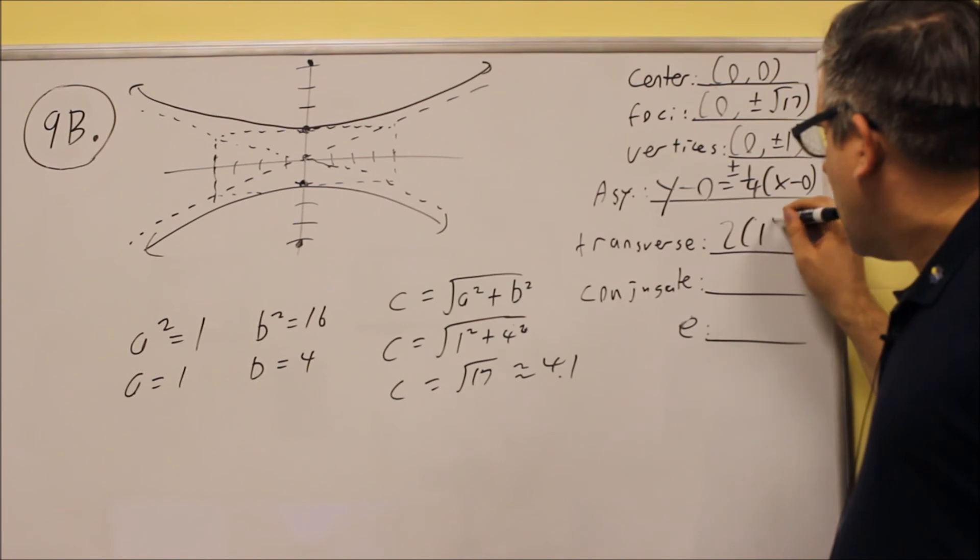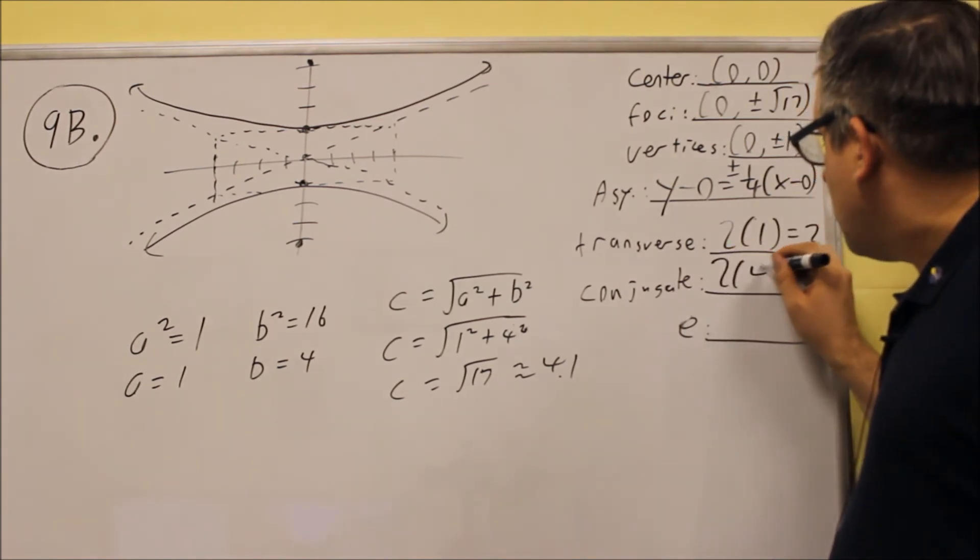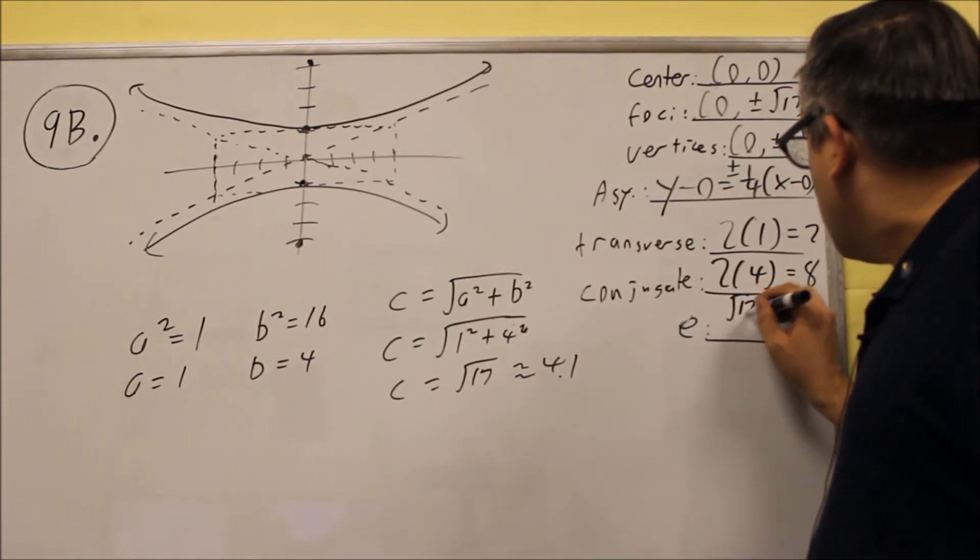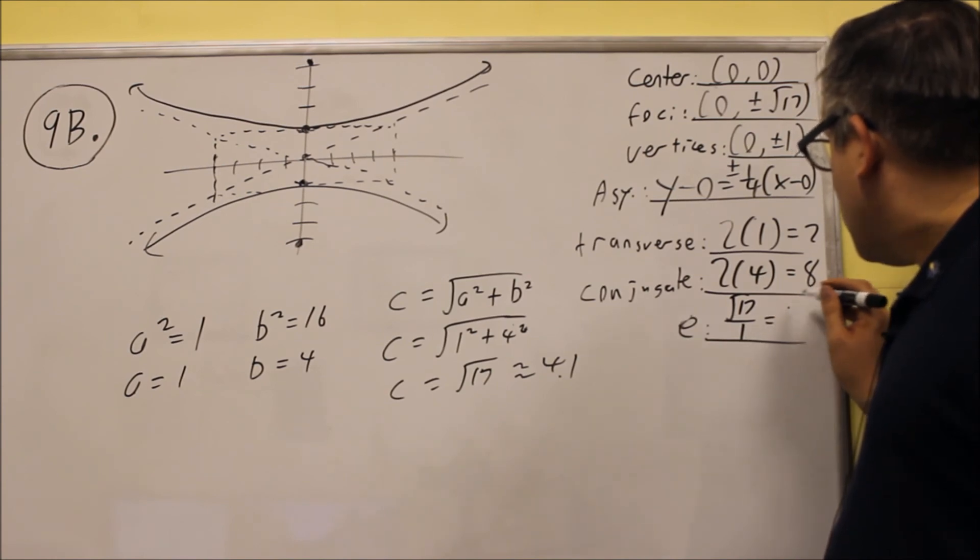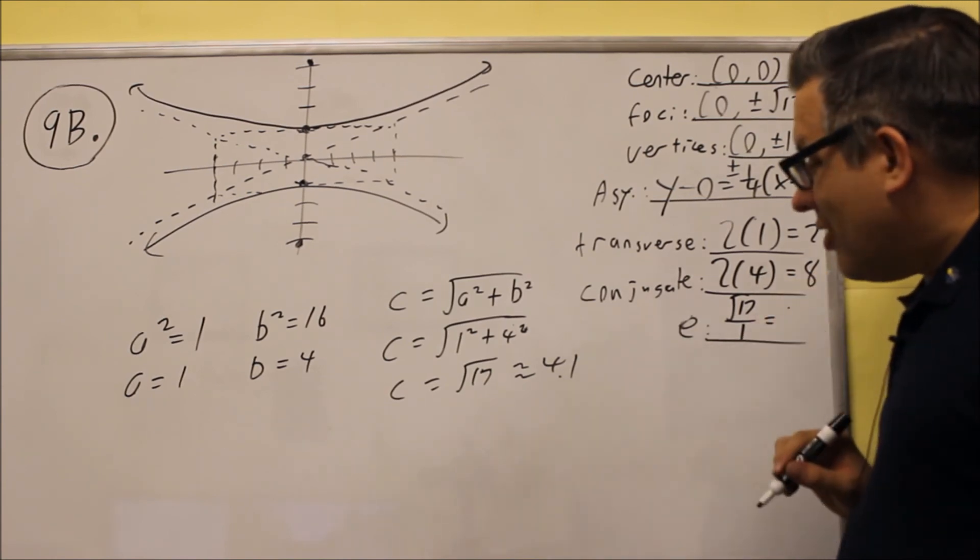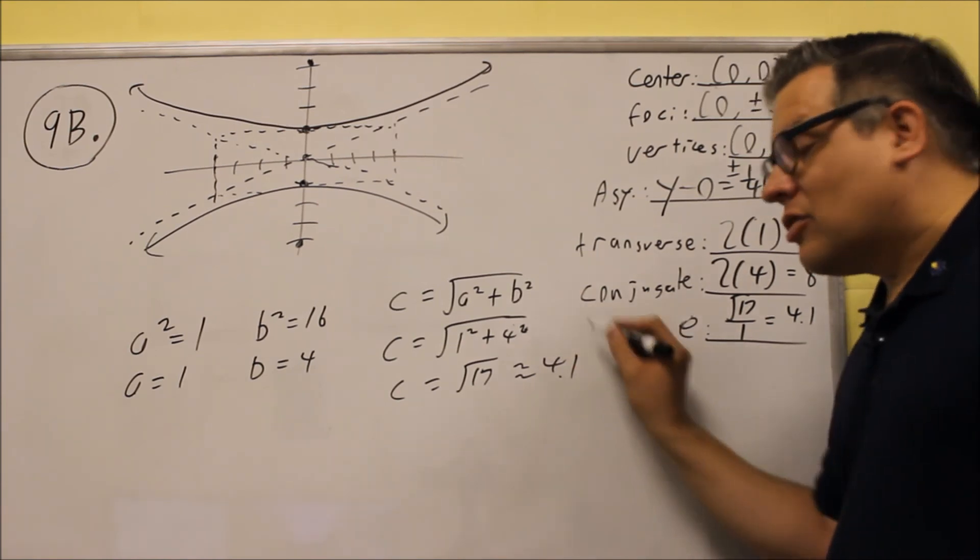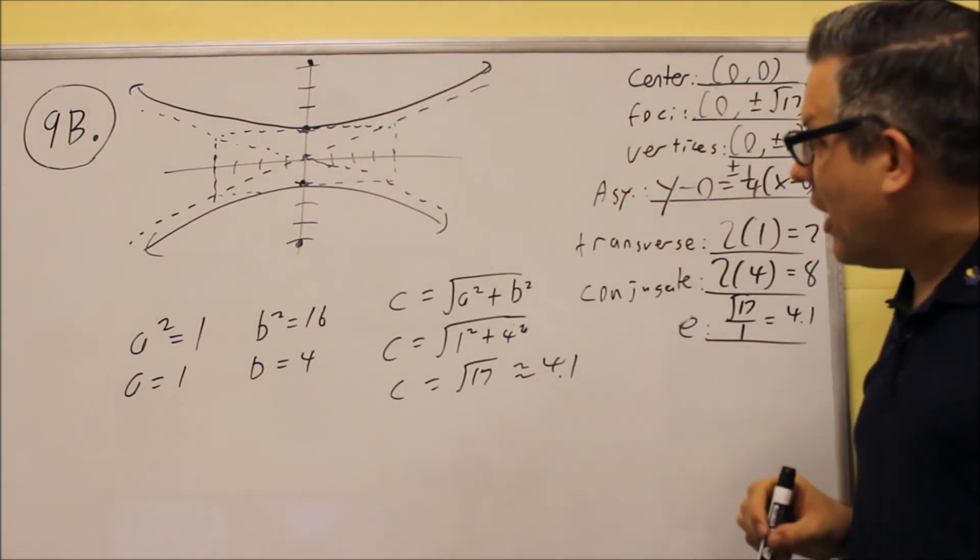We need transverse axis is 2 times a, 2 times 1, which is 2. Your conjugate is 2 times b, 2 times 4, which is 8. Eccentricity is c over a, so square root of 17 is going to be your e, which again, we did that already, 4.1. Typically, the larger the value for c is, the wider it becomes. This is really a wide one that we have with that.